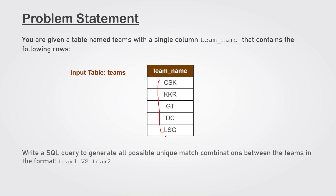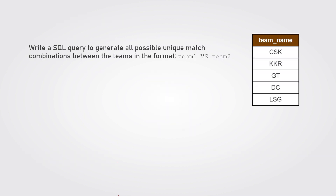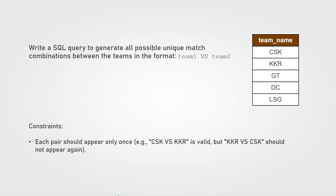You have to write a SQL query to generate all the possible unique match combinations between the teams, in the format team one versus team two. The first constraint is that each pair should appear only once — for example, CSK versus KKR is valid, but KKR versus CSK should not appear again, as it would be counted as a duplicate.